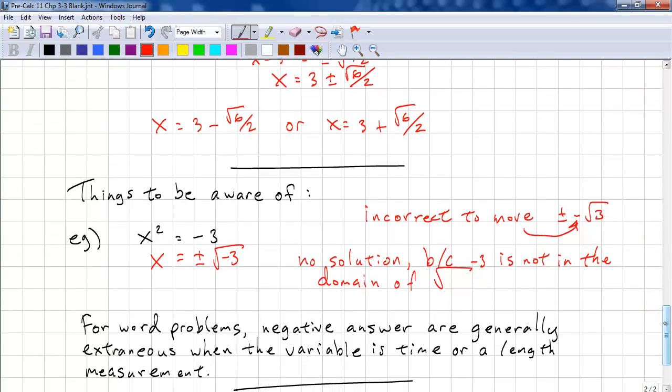And for word problems, negative answers are generally extraneous because the variable is usually representing time or length. And as you recall, we don't have negative time or negative length. And that completes this lesson.